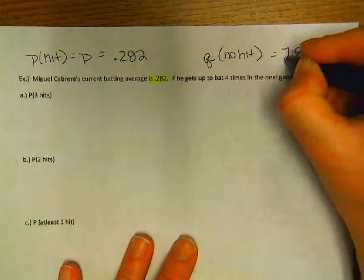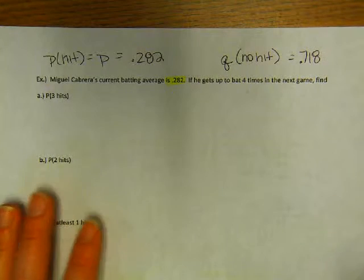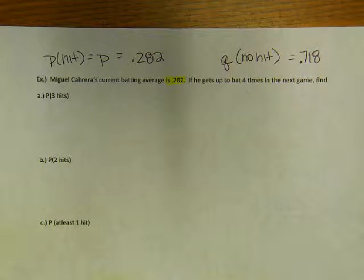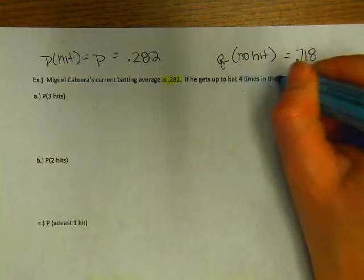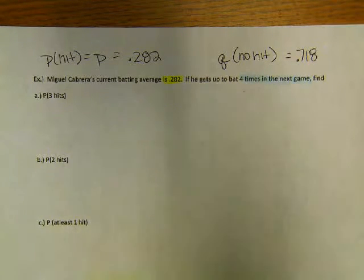So what's the probability, and this is what's important, he gets up to bat four times the next game. How many trials are there then? Four. Okay, so here are the possibilities.